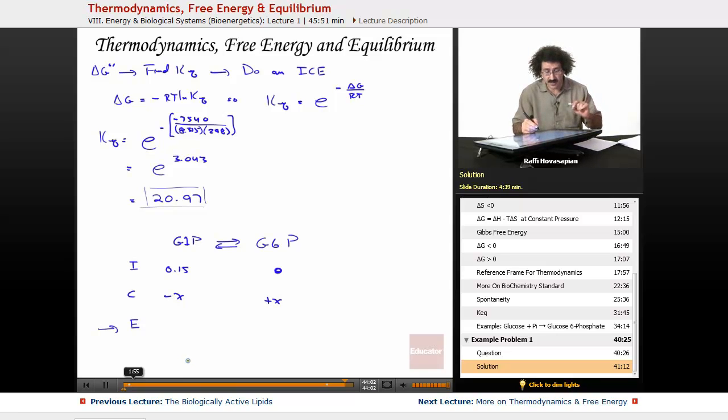The equilibrium is the initial plus the change that took place, so 0.15 minus X and X. These are the values that I need.